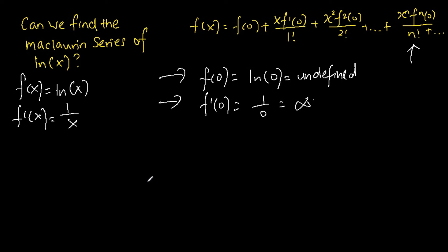So that's it. The reason why there is no Maclaurin series for ln(x) is because the function is not defined when x equals zero, for both f(0) and f'(0). That's it.